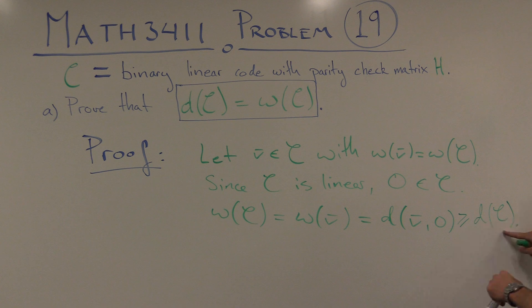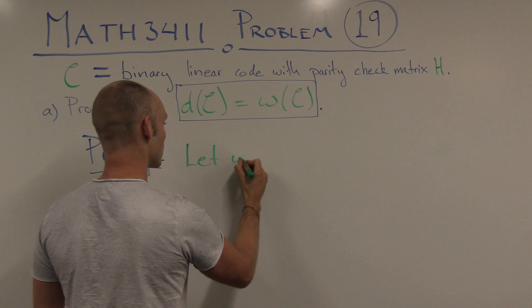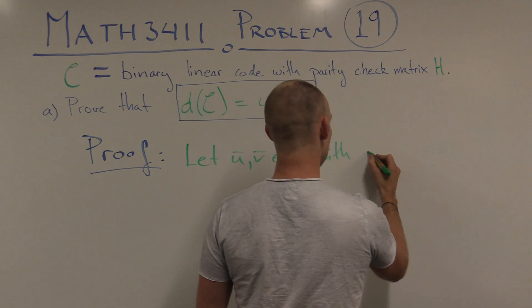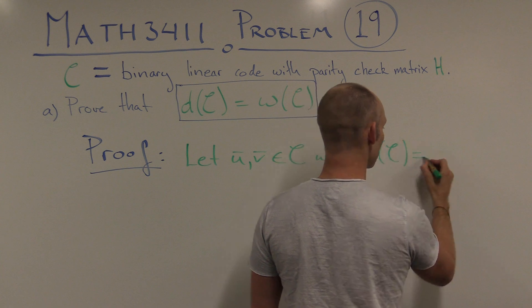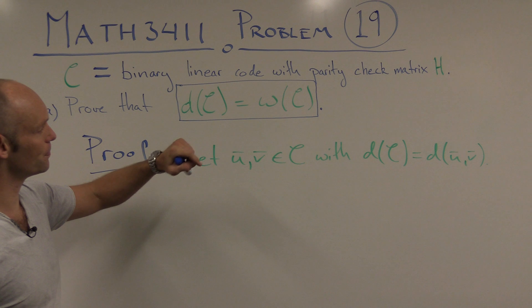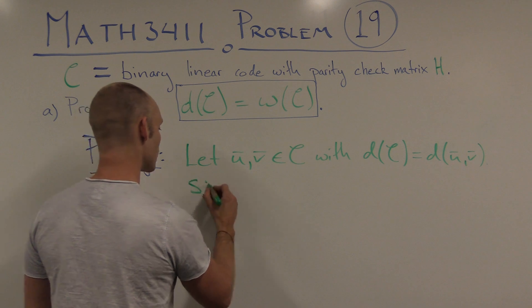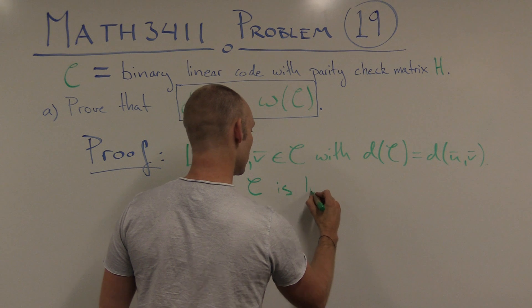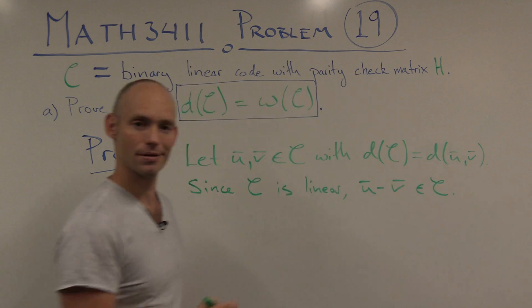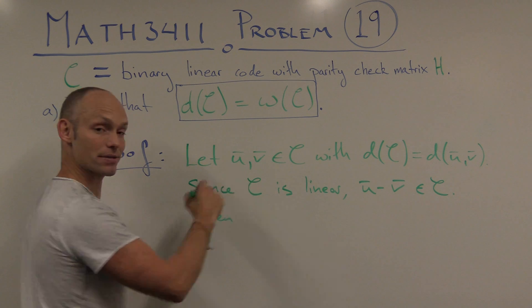Now we just have to prove the other direction — that the minimal distance is also greater than or equal to the minimal weight — and then we have equality. Let U and V be codewords with distance exactly equal to the minimal distance of our code. We can again use the fact that C is linear, which means that the difference U minus V is also a codeword.